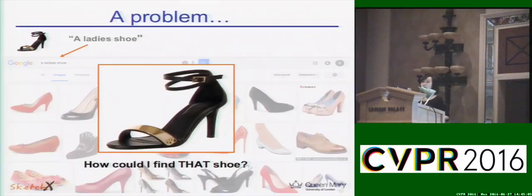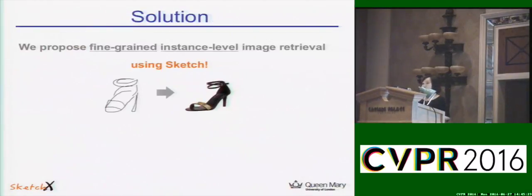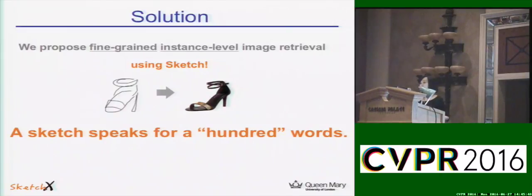Some of you may have encountered similar problems. In some cases, especially when we do online shopping for items like shoes, handbags, or chairs, we have a clear idea about the image we want to search but we don't know how to describe it. And most of the time we don't have a similar photo on hand to do photo-based image retrieval. So we propose fine-grained instance-level image retrieval using sketch. Imagine if we can sketch objects directly on our phone or tablet and use the sketch to do image retrieval — it would become much easier, because a sketch speaks for a hundred words.